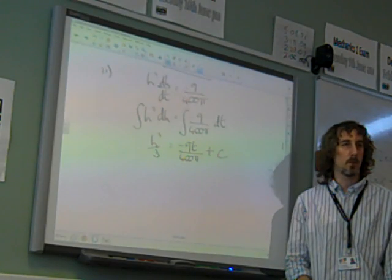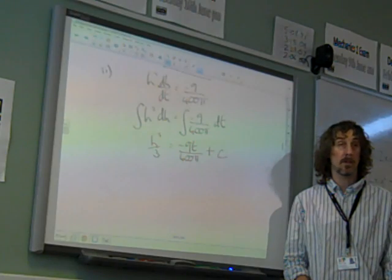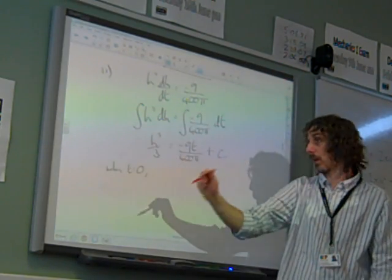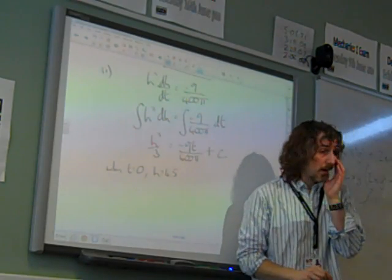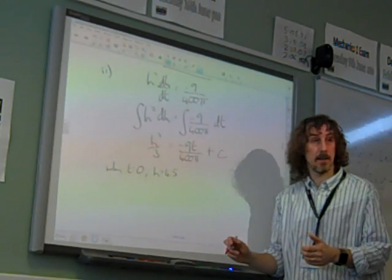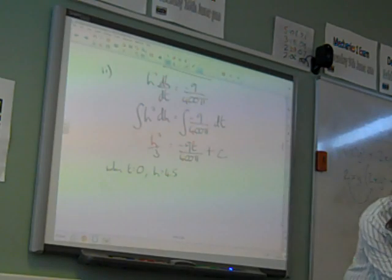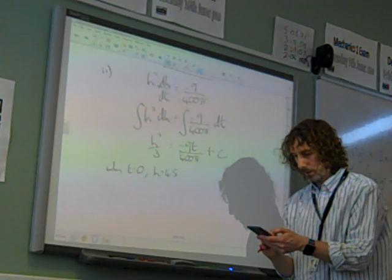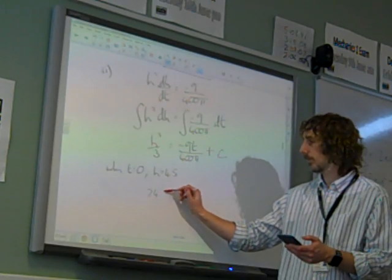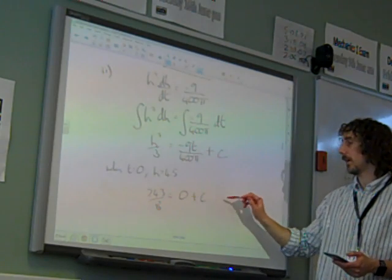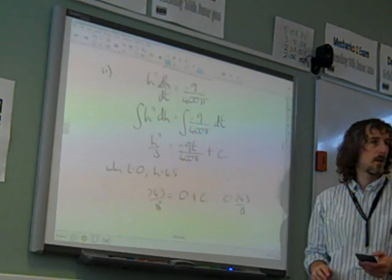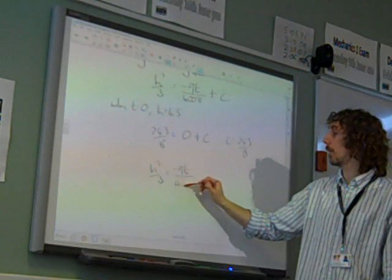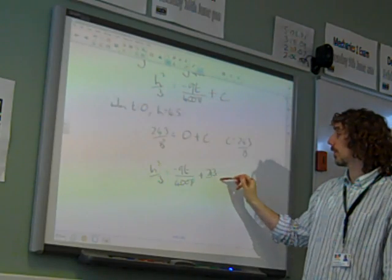So at this point, before I do anything else, I want to work out what c is. Oh, hang on. When this all started, when time was zero, the height was, it was full to the brim, the cone, wasn't it? And we're told that was 4 and a half. So h is equal to 4.5 at the initial moment. So we sub that in, and that gives us 4.5 cubed over 3. 4.5 cubed over 3 is 243 over 8, is 0 plus c. So c is 243 over 8. So I've now got my equation looking like h cubed over 3 is minus 9t over 400 pi plus 243 over 8.